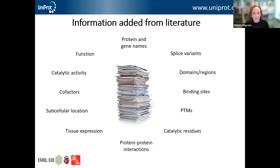During the curation process a huge amount of information is added from the scientific literature. Curators collect protein and gene names, information about the function of a protein, and for enzymes, what reactions are being catalyzed and if any cofactors are required. They also capture where in the cell a protein is located, what tissues it's expressed in, whether it interacts with other proteins, whether it's alternatively spliced, and information related to features of the protein sequence — such as domains, binding sites, post-translationally modified sites, and sites important for catalysis. All of this is compiled from multiple papers and organized.